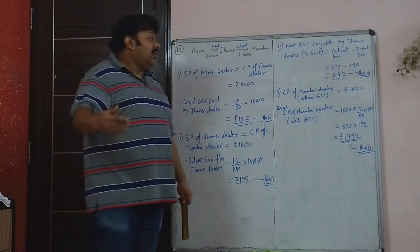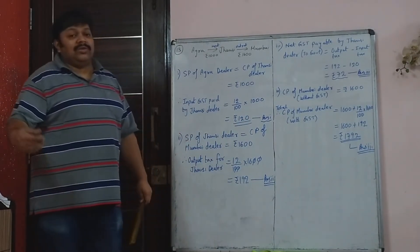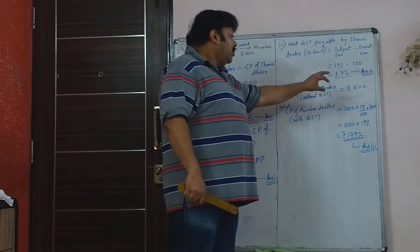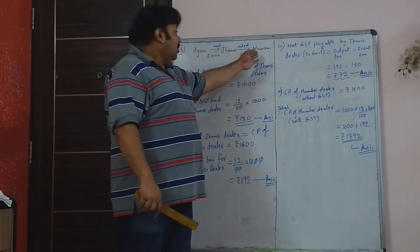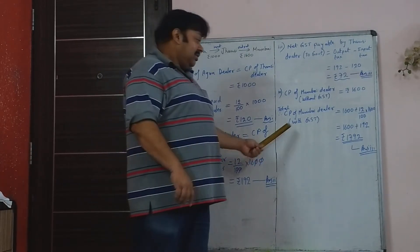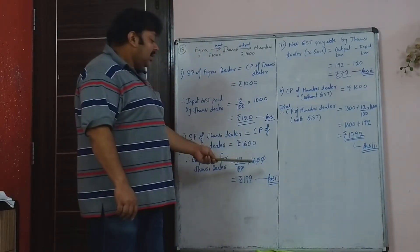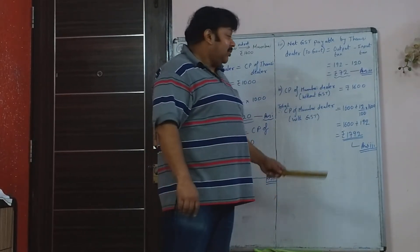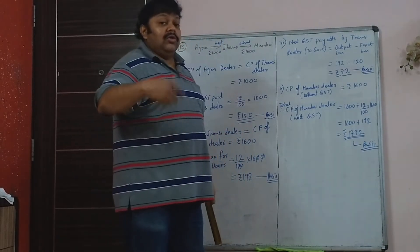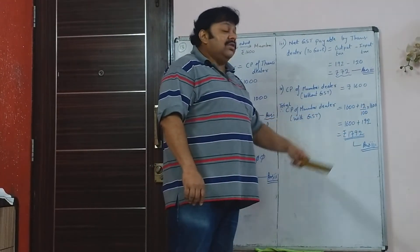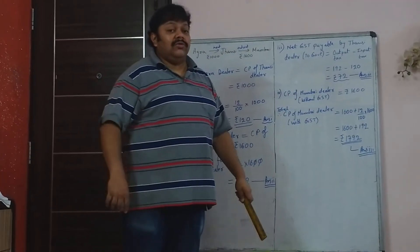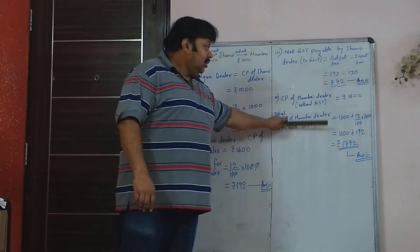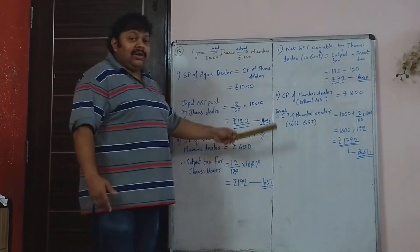The CP for Mumbai dealer: they have asked total CP, which means including GST. CP without GST is Rs. 1,600, plus 12% of Rs. 1,600, which is Rs. 192 GST. So the total price paid by Mumbai dealer — CP with GST — is Rs. 1,792. Usually when you say CP it does not include GST, but here they mean total CP including GST, so write both — without GST and with GST — so it is very clear.